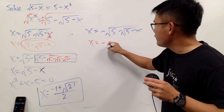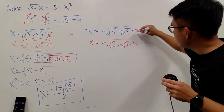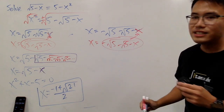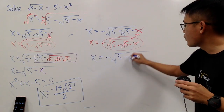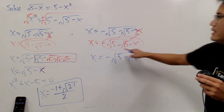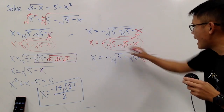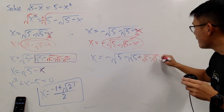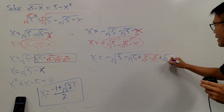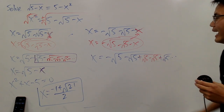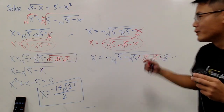Now for the negative case: x equals the negative version of the square root of 5 minus the square root of 5 minus x. Here we have this x again, so we substitute it back in. Since x is negative, minus a negative becomes plus. So this becomes negative square root of 5 minus the square root of 5 plus the square root of 5 minus... and so on. This is an alternating infinite nested radical — really cool!